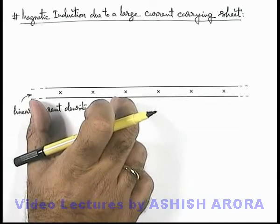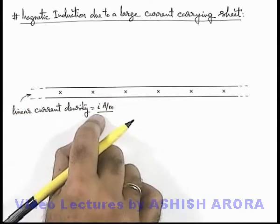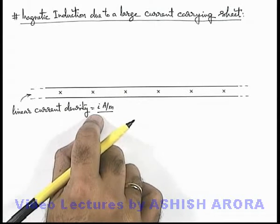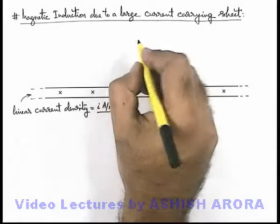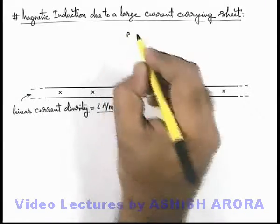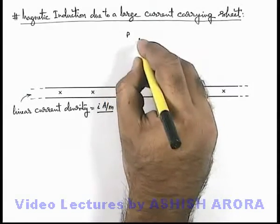That means in 1 meter length of this sheet, the total current carried will be i ampere per meter. Now in this situation, if we wish to find out the magnetic induction at a point P, which is located at a distance r above the sheet.